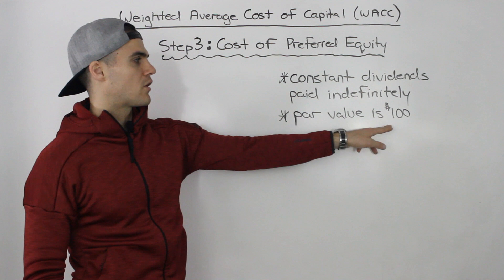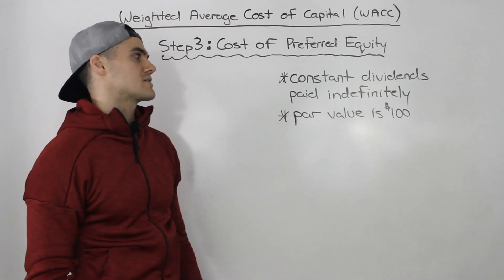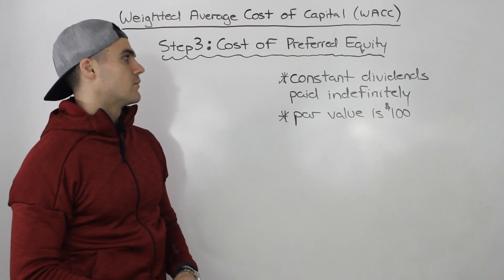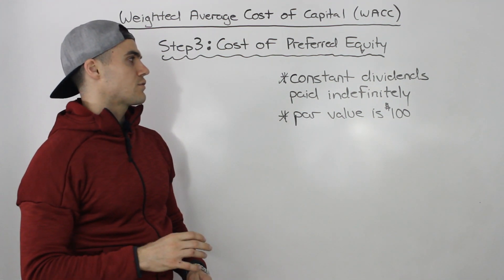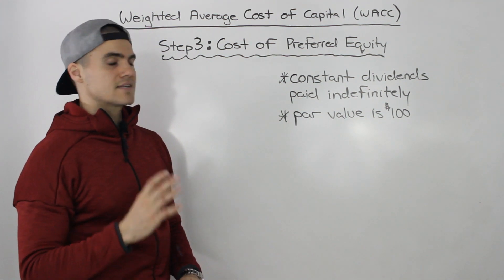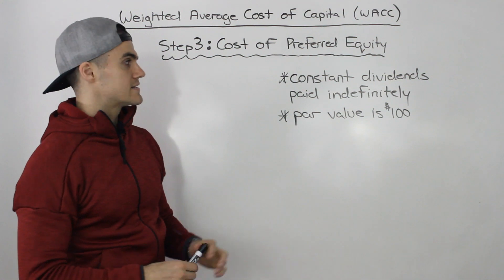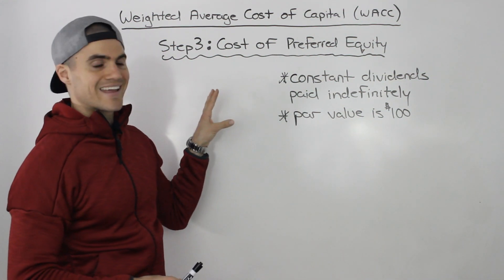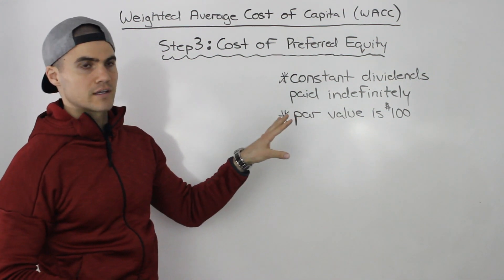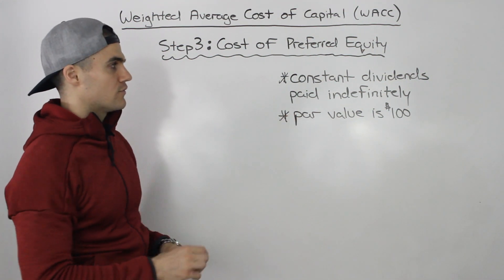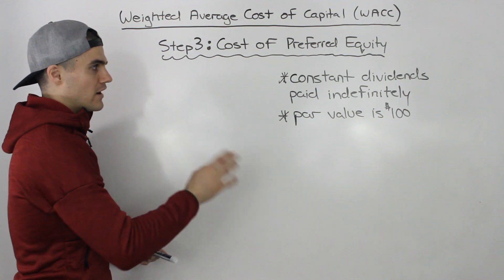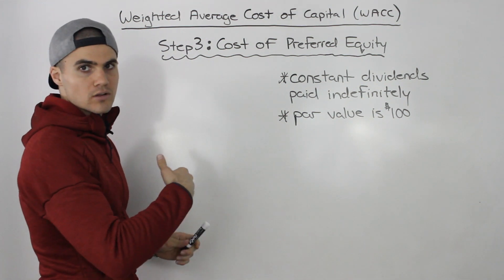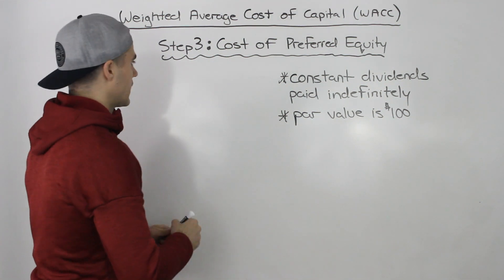Unless they give you a different par value in the question, you assume the par value of preferred equity is always $100. That's different than the par value for bonds — usually with bonds we're working with a par value of $1,000, while with preferred equity par value is $100. And unless stated otherwise, the dividends are being paid indefinitely.